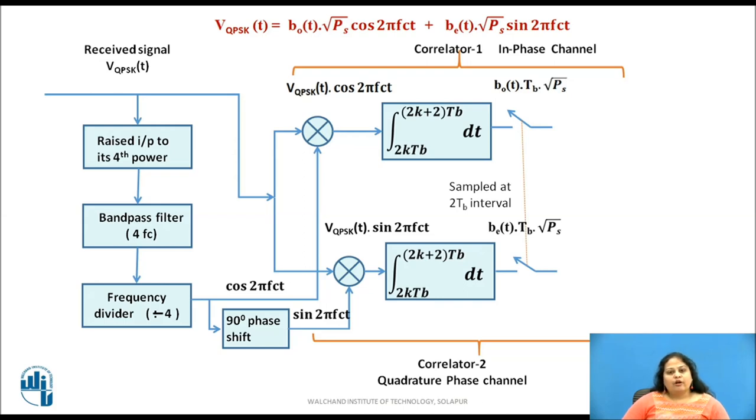The output of both the integrators are sampled after every 2 tb time interval. The sampled values are either positive or negative depends upon the bit 1 or 0 at BO of t and BE of t. For bit 1 it is positive and for bit 0 it is negative. These two sampled values are then applied to a decision device whose threshold value is set to 0 volt. The device produces an output bit 1 if the input to it is positive voltage and produces an output bit 0 if input is negative voltage.